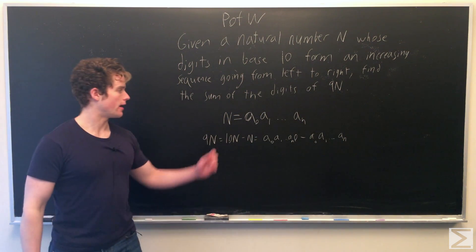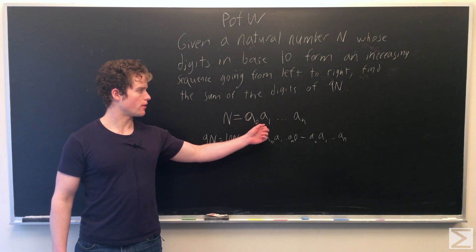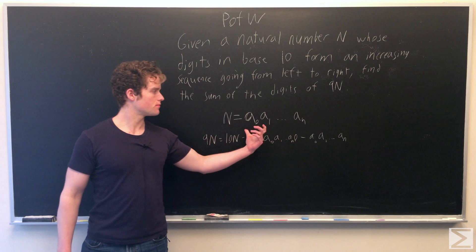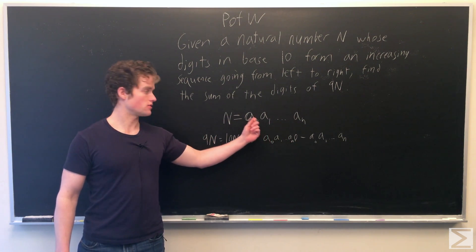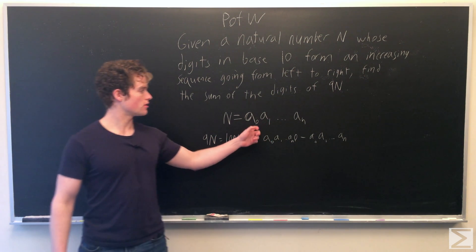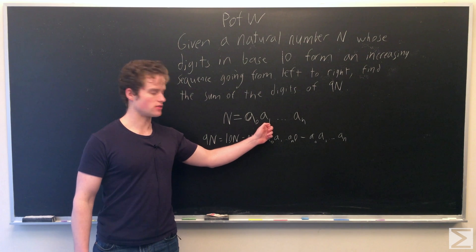First, we are going to write n equals a0, a1, ..., an for some n, and our notation here, these are not getting multiplied, but the digit here is a0, the digit here is a1, etc.